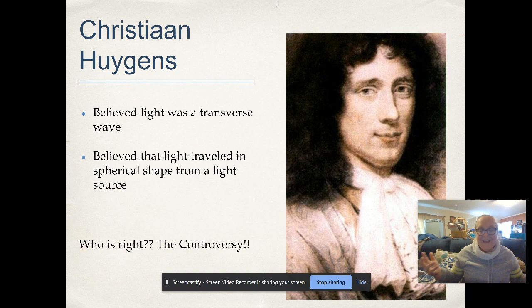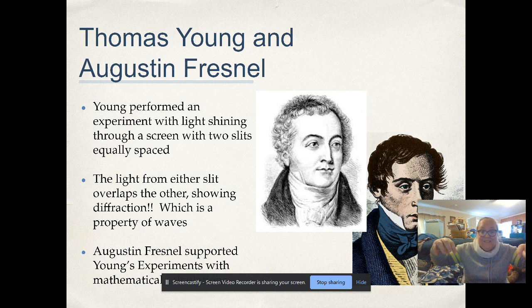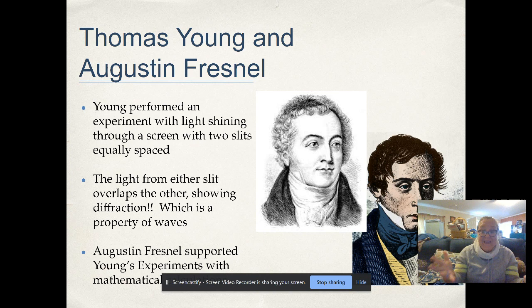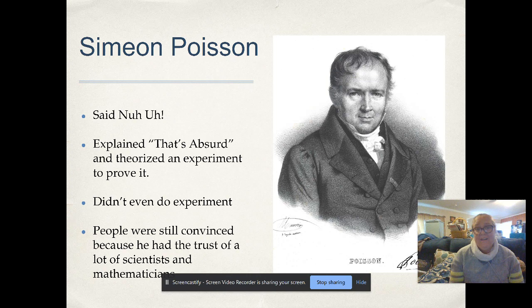Thomas Young then came on the scene and performed his famous double-slit experiment, shining light through two equally spaced slits. The light overlapped on the other side — demonstrating diffraction, a property of waves — so he argued light is a wave. Augustin Fresnel, a mathematician, supported Young's experiments with mathematical calculations.